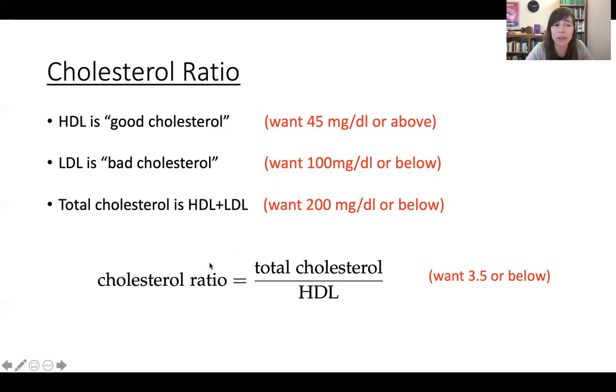But if you're given, say, just the LDL and the total, then you get the numerator right away, but then you might have to solve for the HDL by just subtracting the LDL from the total. And then you can calculate this ratio.